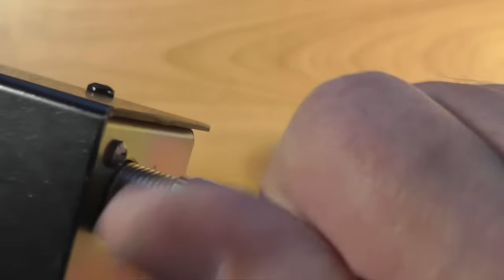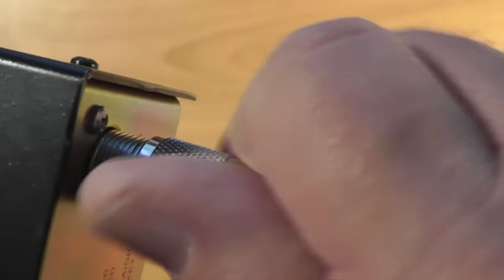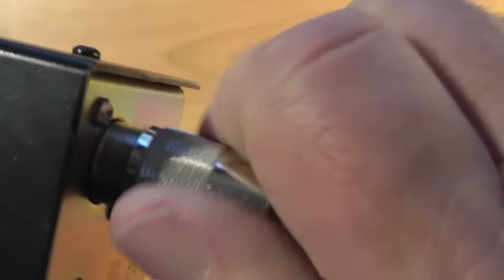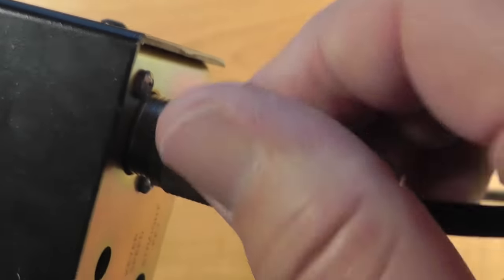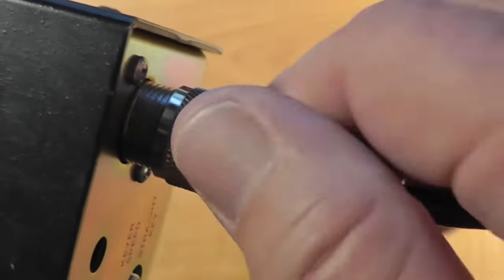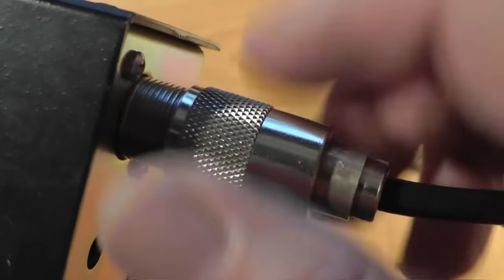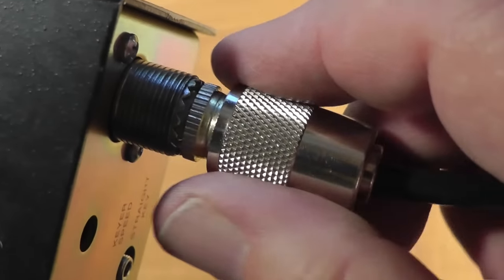You gently push the center pin into the jack until the protrusion locks into a similar cutout on the jack. Then, being careful not to cross-thread, you screw the ring onto the socket until it's finger-tight. Never over-tighten. This gives a very solid connection that's both electrically and mechanically secure.